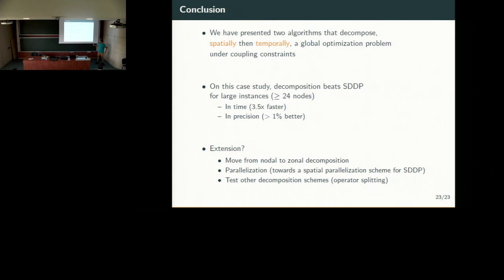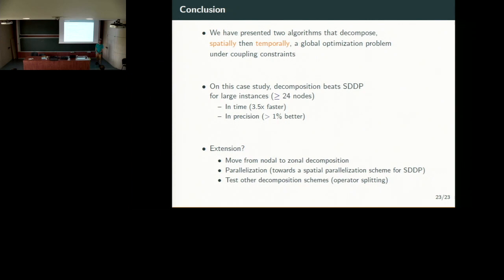We want to extend this study to other decomposition algorithms. We considered only the two classical decomposition methods — price and resource decomposition. But we are also able to deal with more complicated decomposition methods relying on operator splitting. For instance, the Chambolle-Pock algorithm is more like a primal-dual approach. We can see price decomposition as a dual algorithm and resource decomposition as a primal algorithm, and we want to mix them together to build primal-dual techniques. We also want to adapt proximal methods to such problems in a stochastic setting. Thank you for your attention.